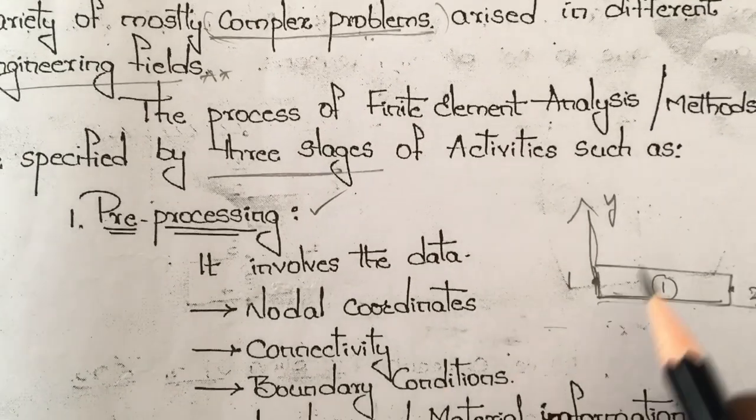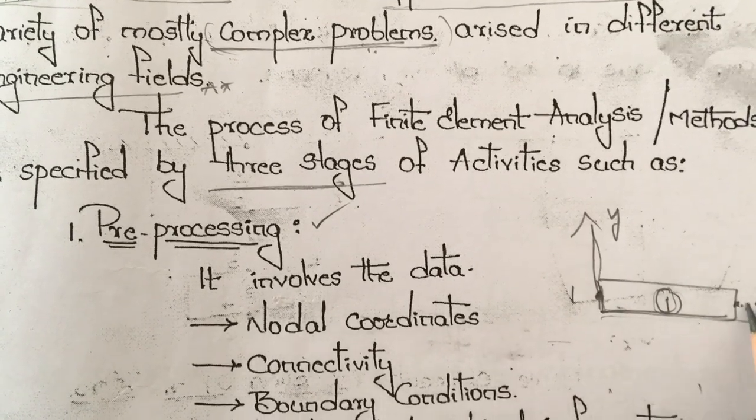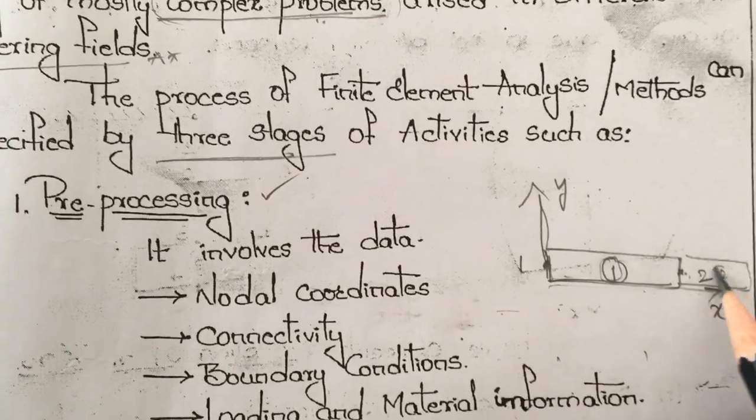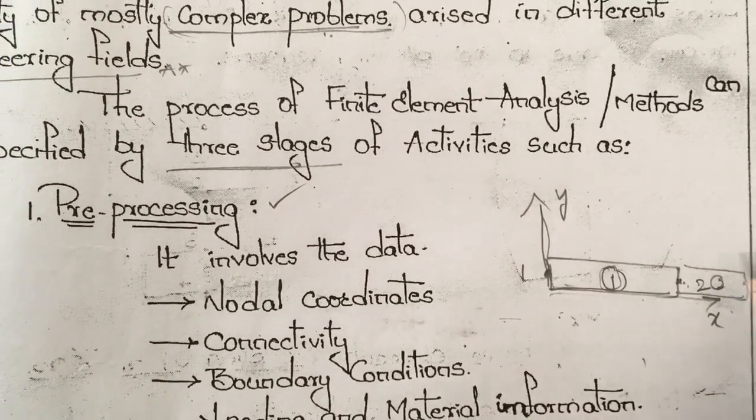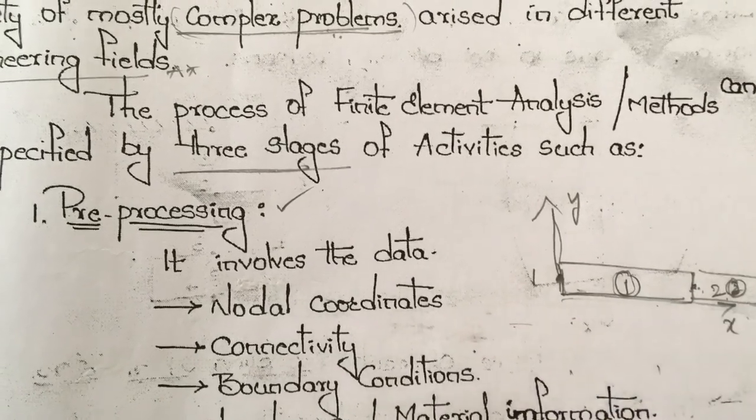And the connectivity - which one is connected to what? For example, Element 1 is connected with nodes 1 and 2. If we have another element, Element 2, the connectivity is 2, 3. For Element 1, the connectivity is 1, 2.